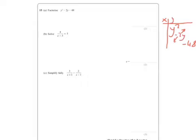So we know that's going to be y and y, and we need pairs of numbers that multiply to make minus 48.